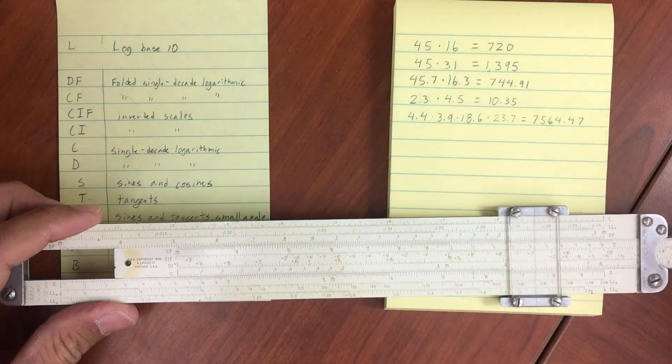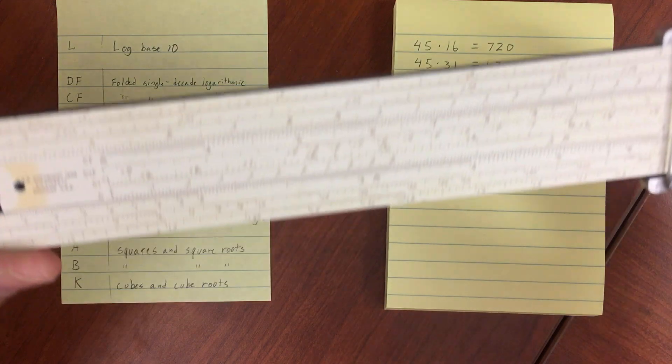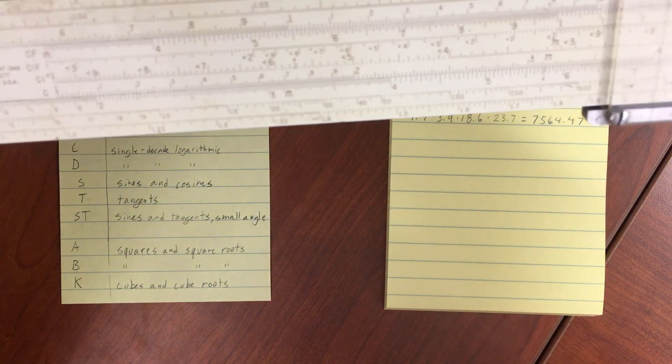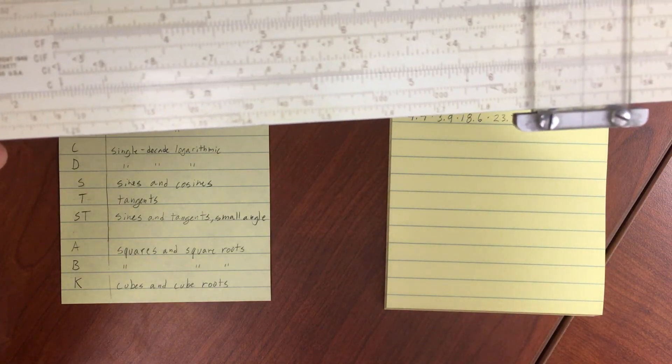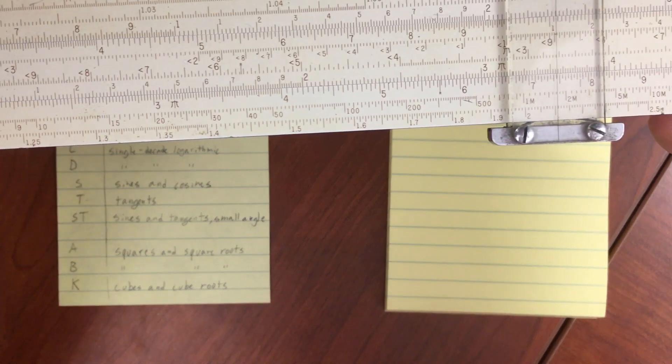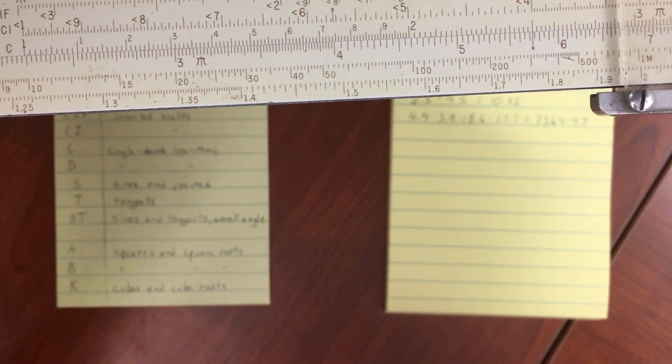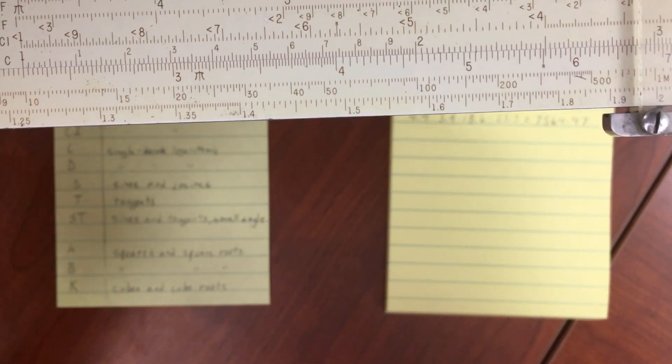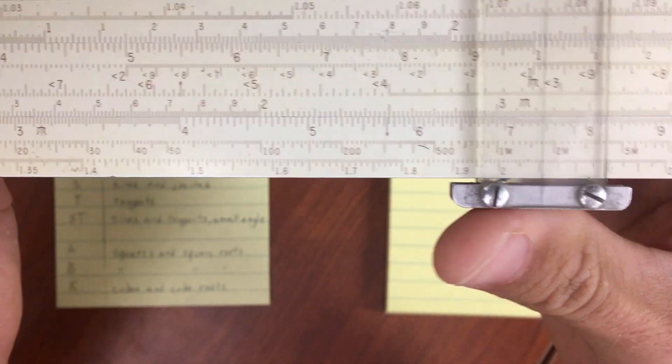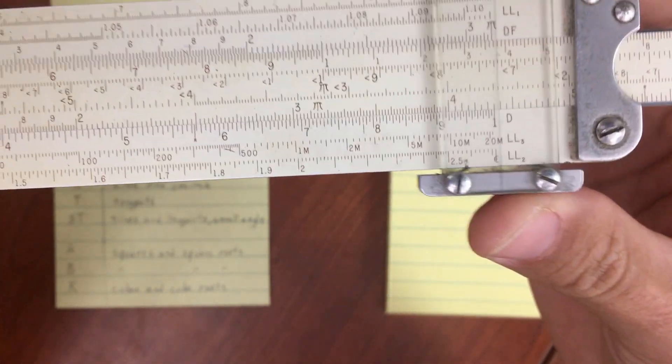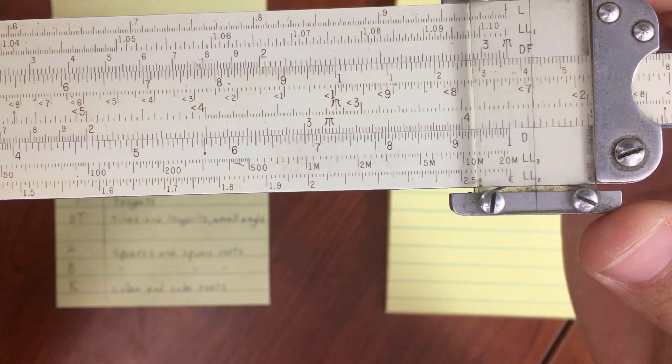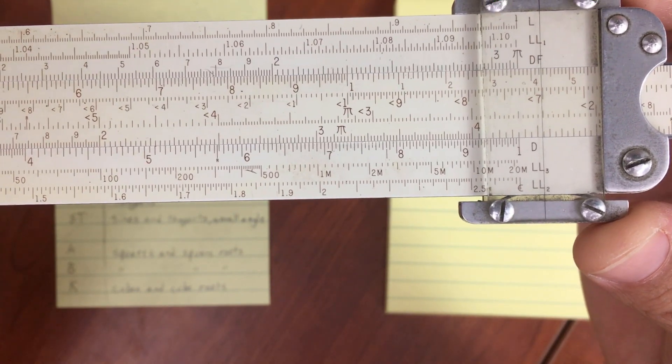Let's do another one here. We've got 2.3 times 4.5. So 2.3, 2, 1, 2, 3, and then times 4.5. And look, again, we've run off the edge of the rule here.